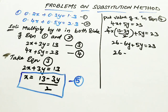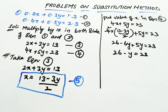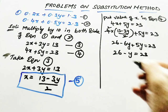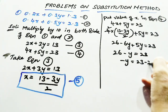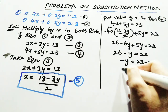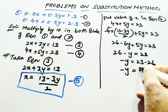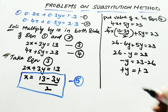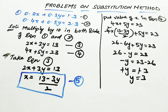26 minus y equal to 23. Minus y equal to 23 minus 26. Minus y equal to minus 3. The negatives cancel, and you get y equal to 3.